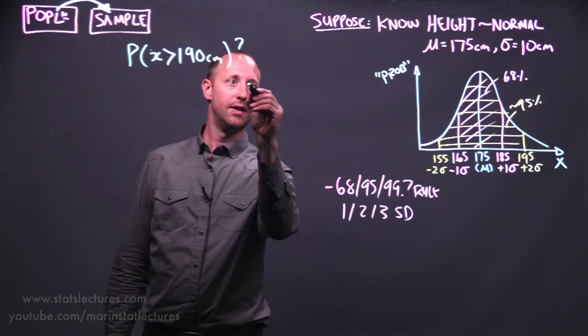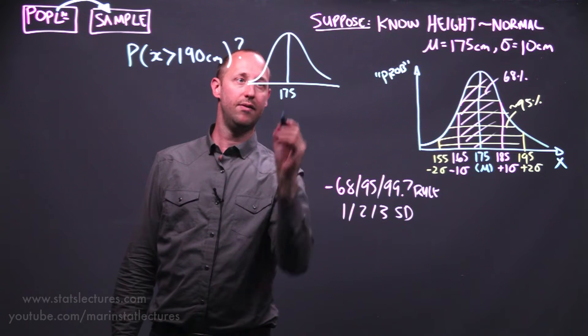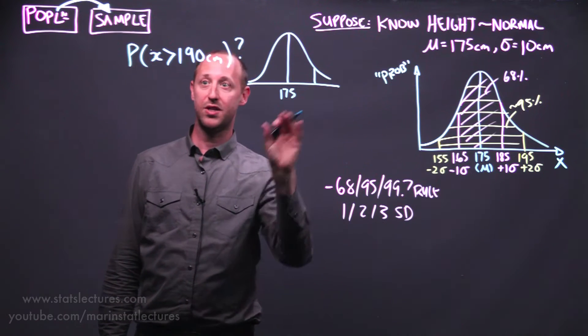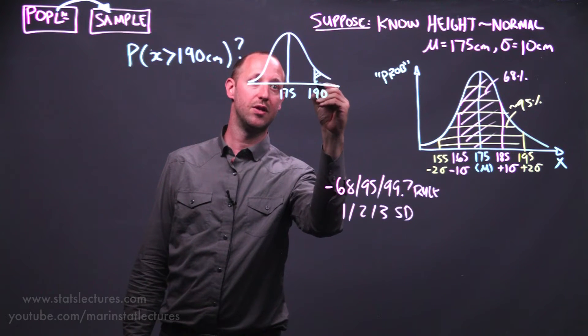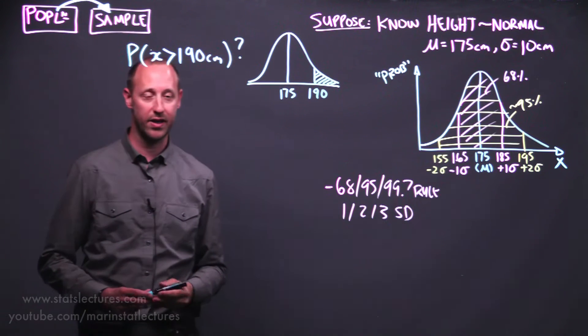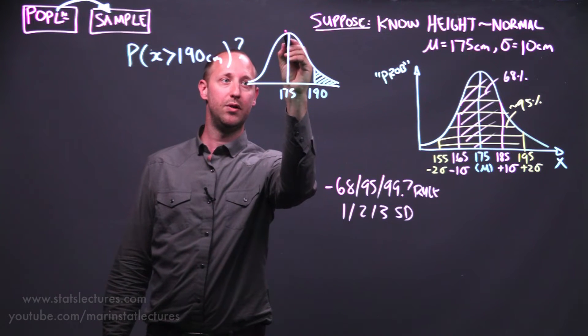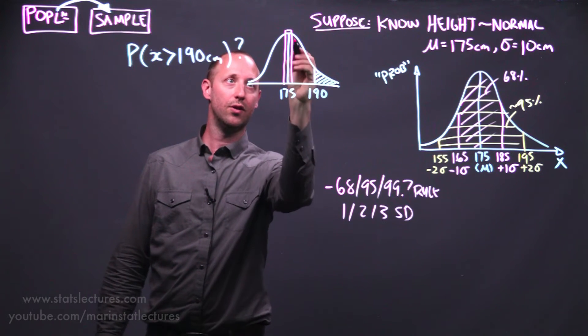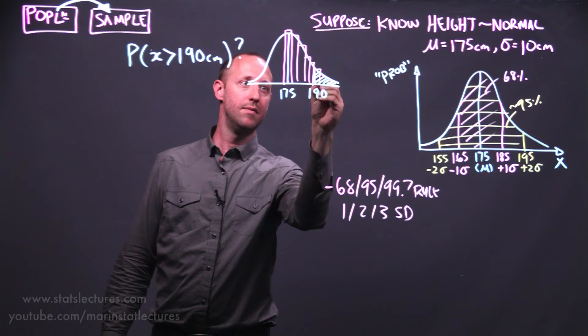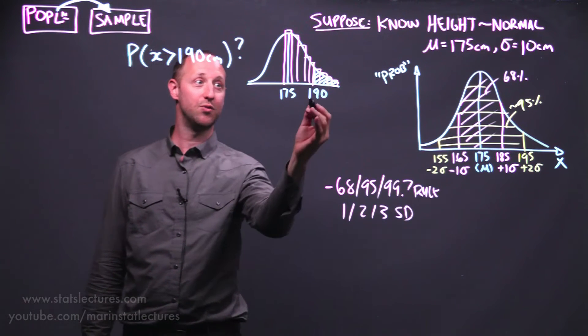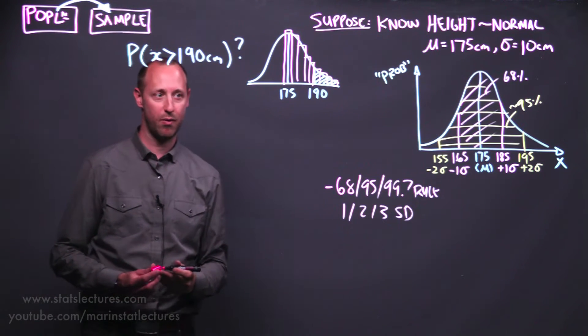To work out something like this, essentially what we want to do, say the mean is 175, if we reach into this population and randomly select one individual, how likely is it that there will be 190 centimeters or more? We'd like to work out this area here. To think of it conceptually, what we're going to be doing is you can think of what you've done earlier when learning these concepts with a histogram. If we wanted to know what percentage of our sample is 190 or more, we'd simply add up these bars here. So conceptually, that's what we want to do.